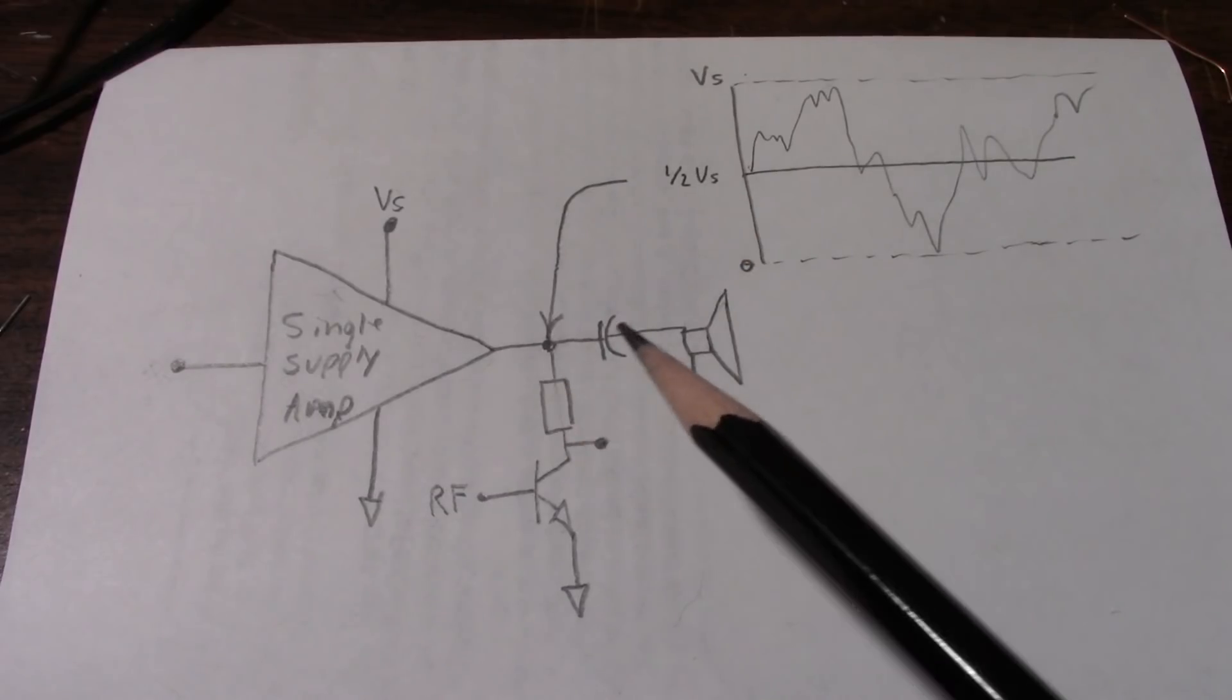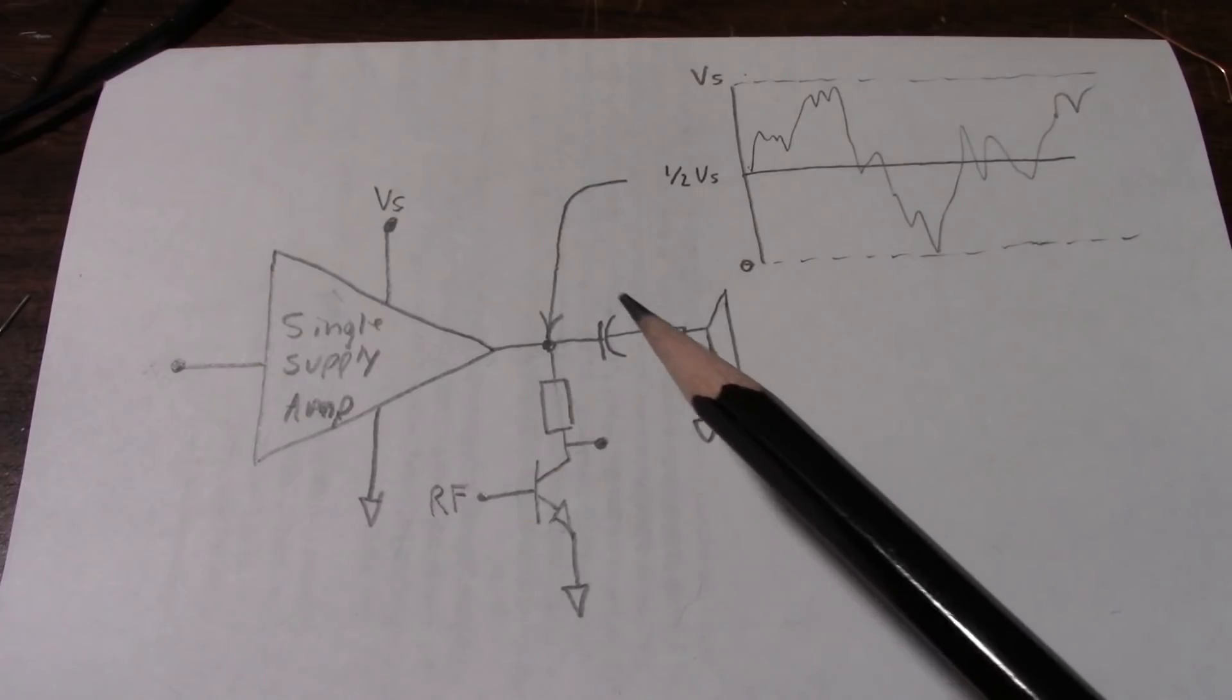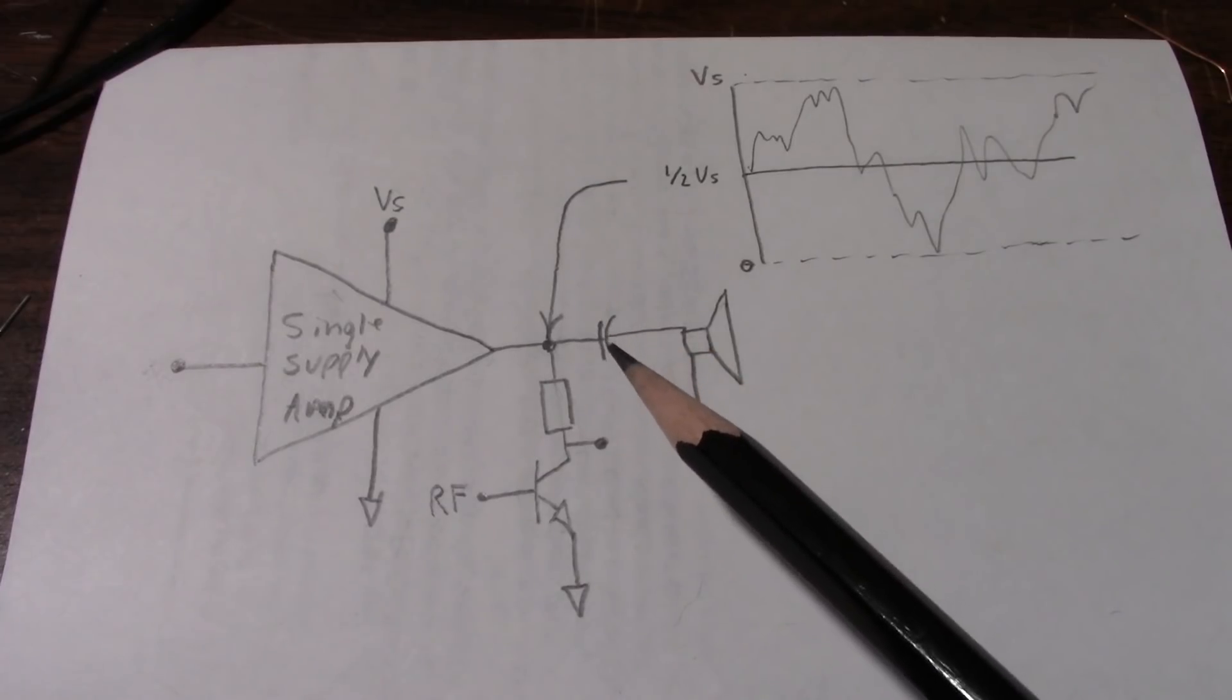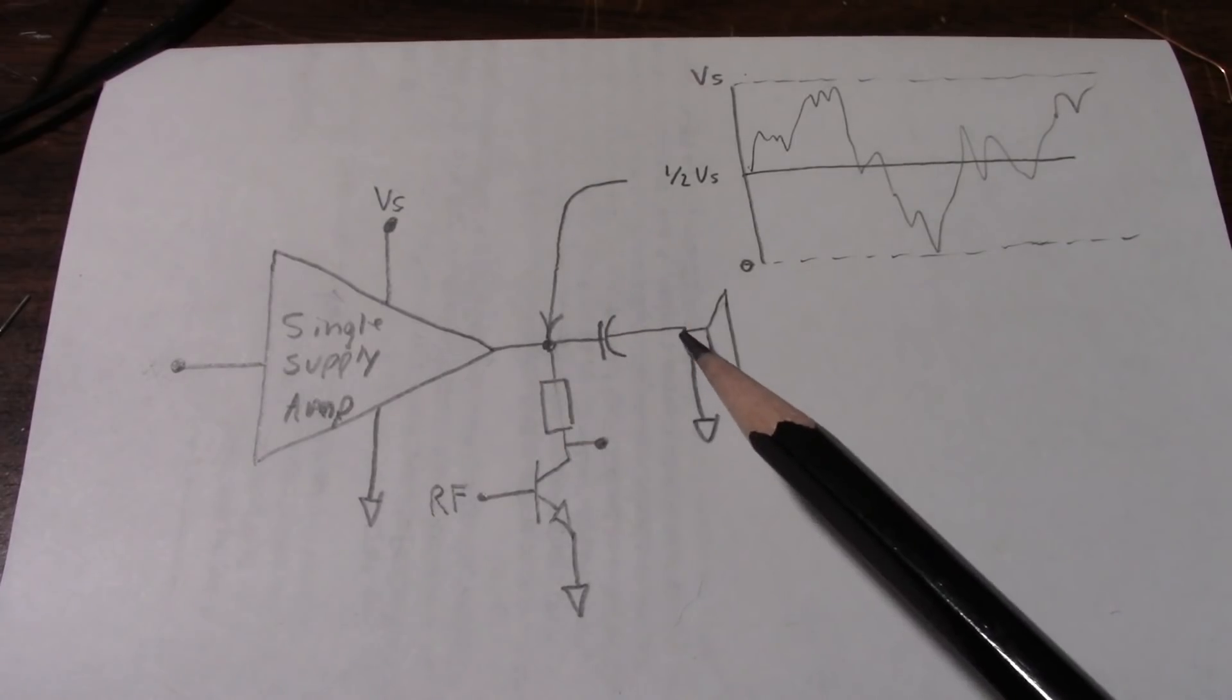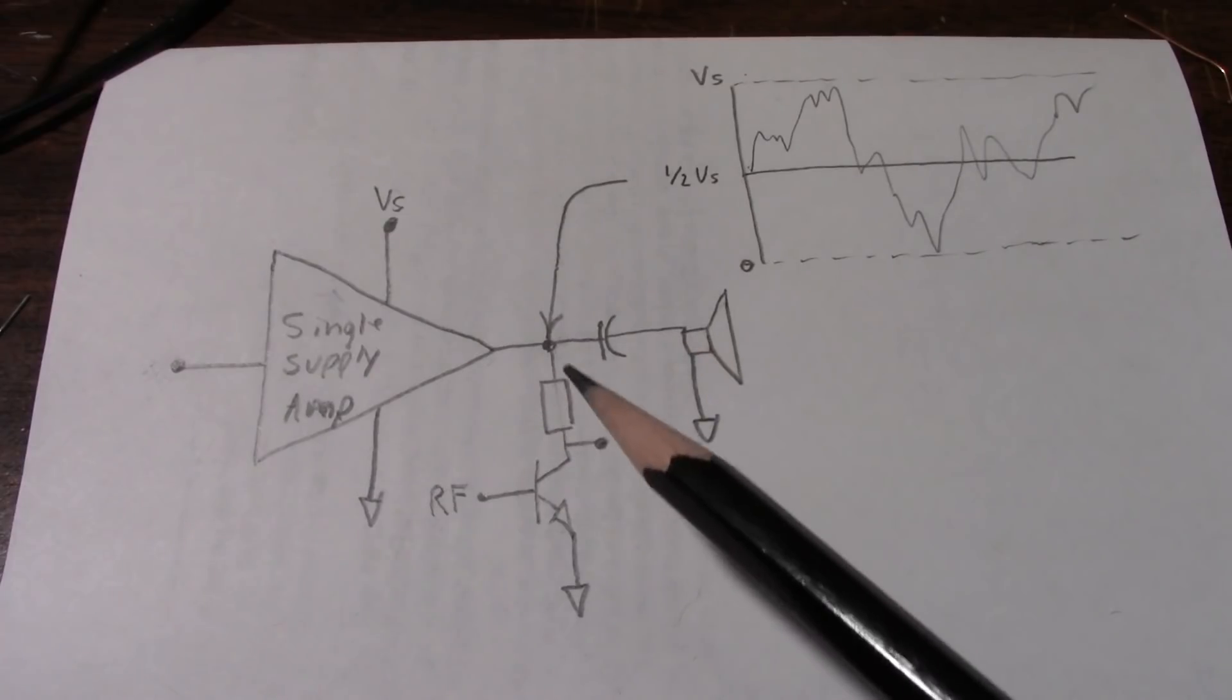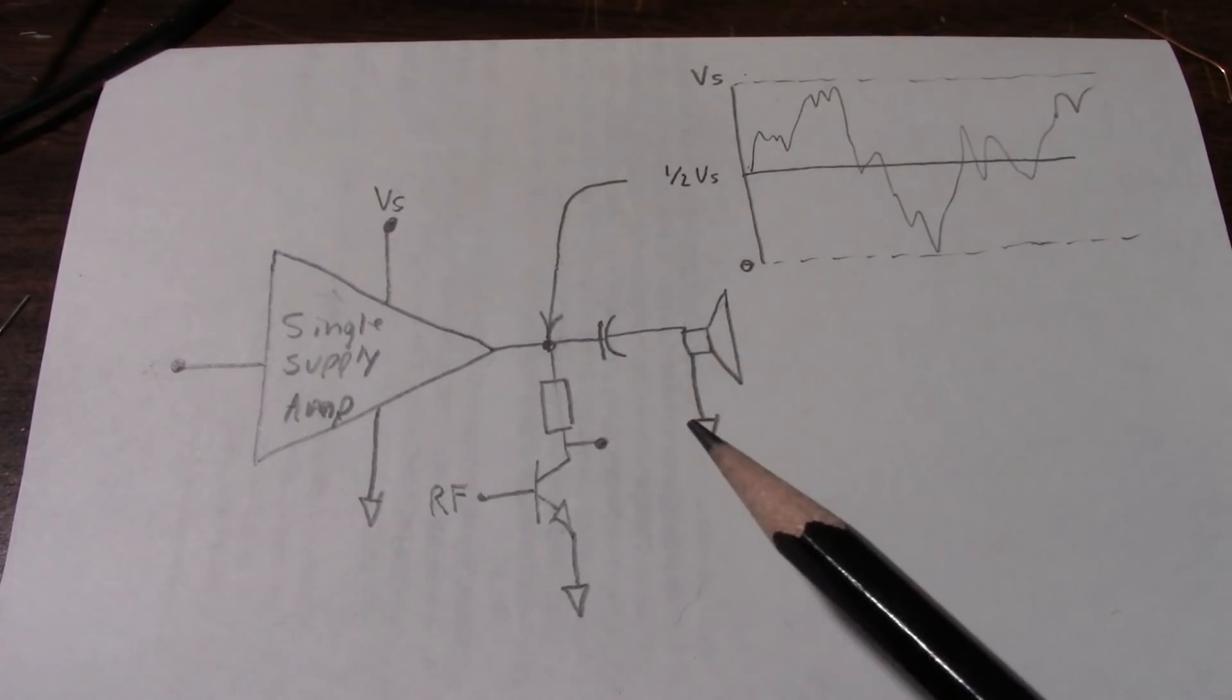Now for a multitude of reasons, you don't want a DC voltage going through your speaker. So normally you add a capacitor between the output and the speaker. That'll block the DC, but allow the AC signal to pass onto the speaker.